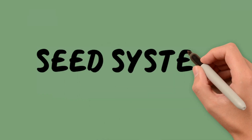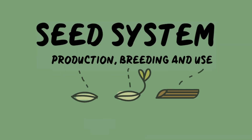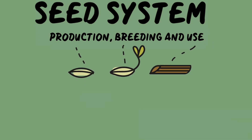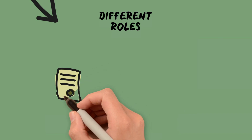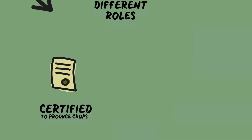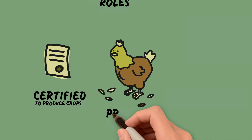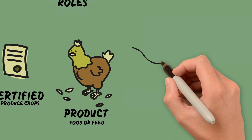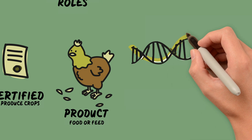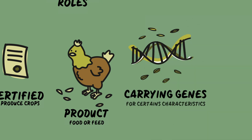A seed system is the ensemble of all the activities of seed production, breeding, and use. The same seed can have different roles in the system. It can be a certified seed and be used to produce crops, but seed can also be used directly as a product, such as food or feed. Finally, a seed can be considered a genetic resource, carrying genes for certain characteristics.